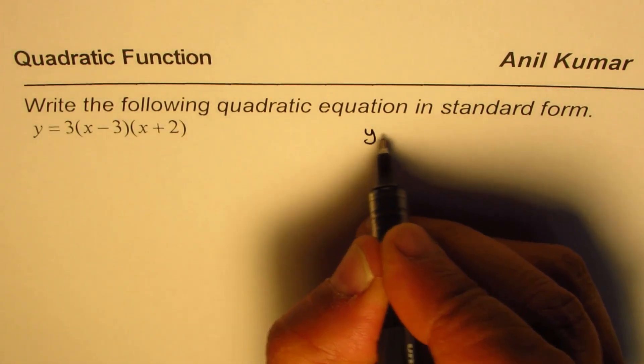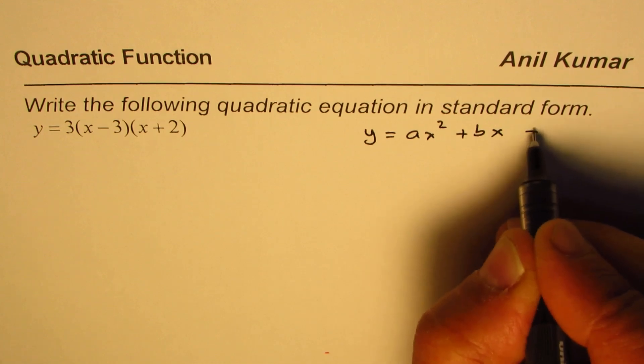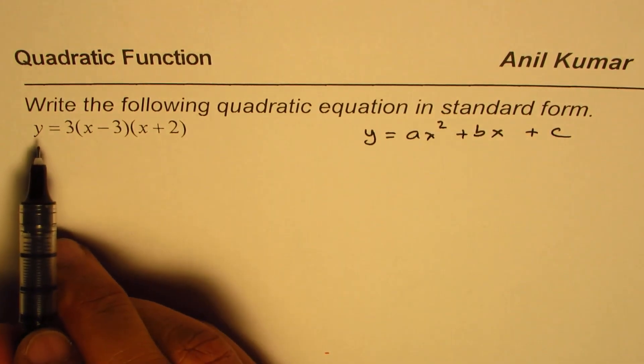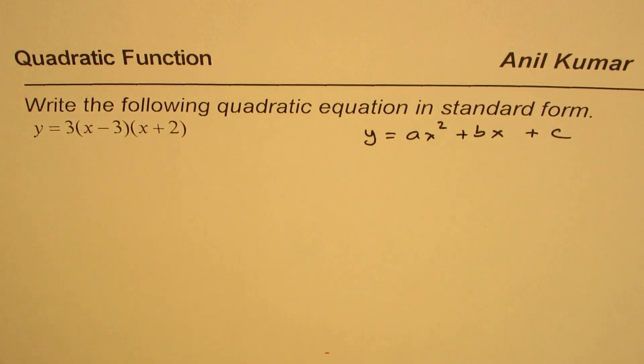Standard form is y equals to ax squared plus bx plus c, right? We are given equation as y equals to 3 times x minus 3 times x plus 2.